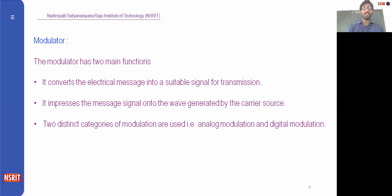The modulator has two main functions: it converts the electrical message into a suitable signal for transmission by providing the extra strength needed to travel long distances, and it impresses the message signal onto the wave generated by the carrier. There is a carrier source at the modulator that provides a high-strength signal, and in that carrier signal your original information is embedded — the carrier signal is modulated according to the parameters of your message signal.